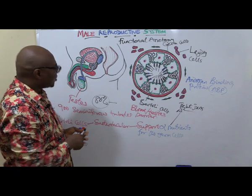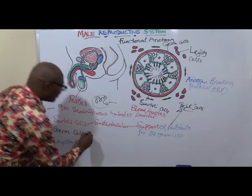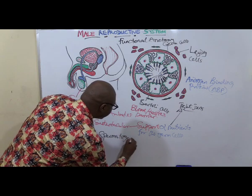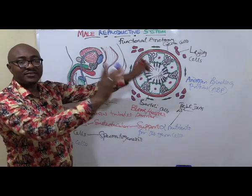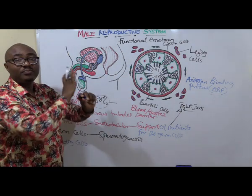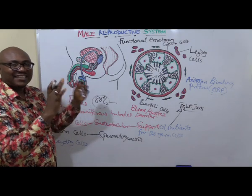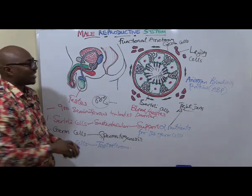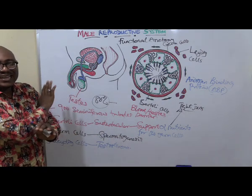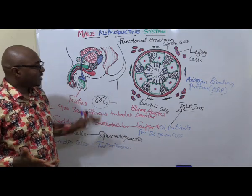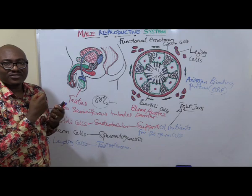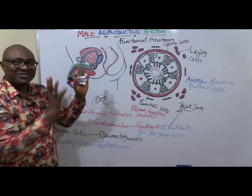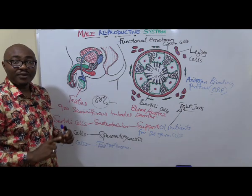The germ cells, as already discussed, produce sperm through spermatogenesis. The third cell type, the Leydig cells, their major function is to secrete testosterone. Without testosterone you cannot have any male reproductive function — spermatogenesis is controlled by testosterone, and all the male secondary sexual characteristics discussed in puberty are brought about by testosterone.